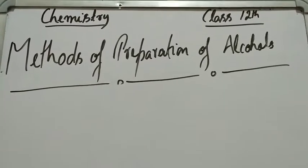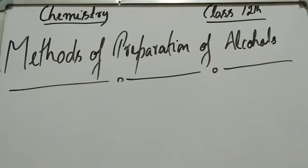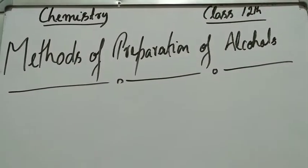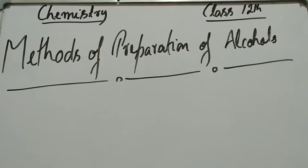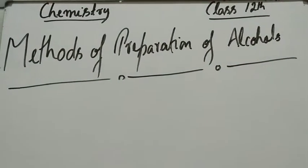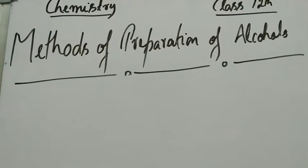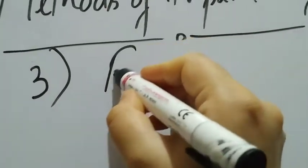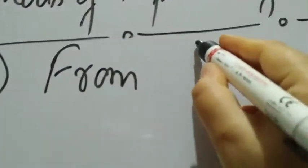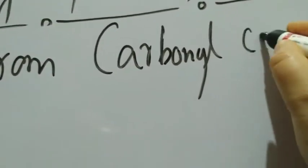We are studying the preparation of alcohols. In the previous presentations, I have given you two methods of preparation — one from haloalkanes and another from alkenes. That of alkenes was a little elaborate, but we have done it already. We will move to the third method, which is preparing alcohols from carbonyl compounds.